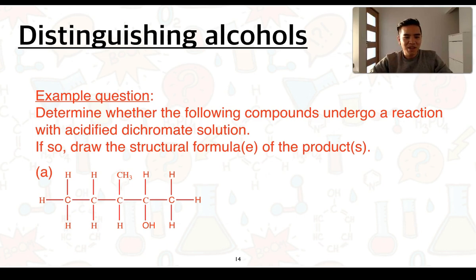We have an example question here. Determine whether the following compounds undergo a reaction with acidified dichromate solution and if so draw the structural formula or formula of the product or products. This is the first part and the first thing that we should do is identify what type of alcohol it is.